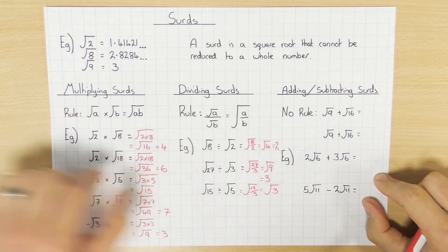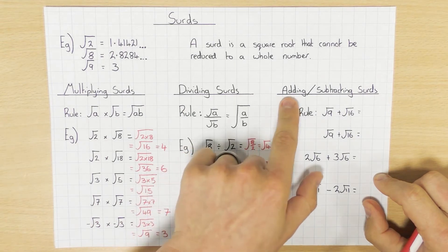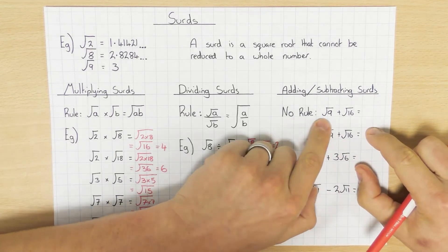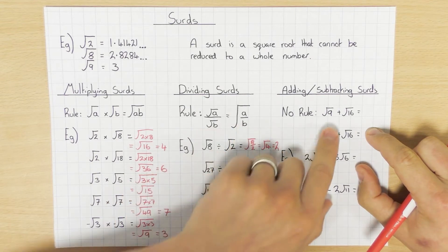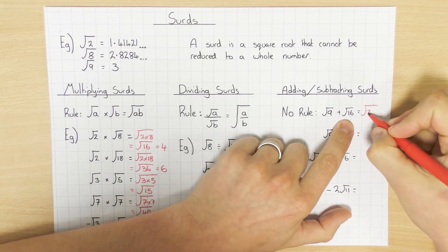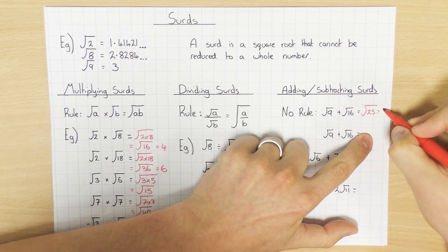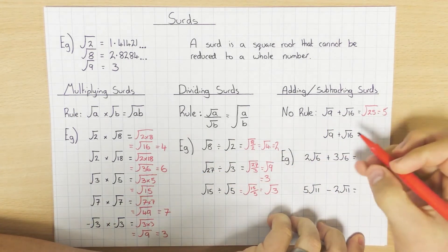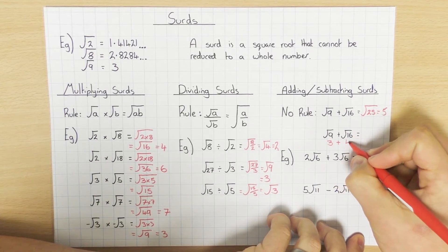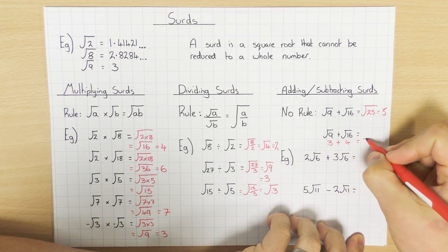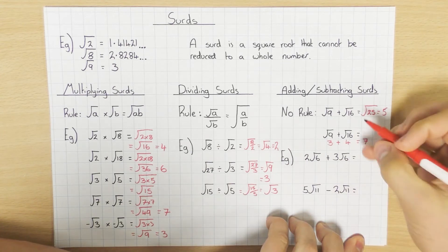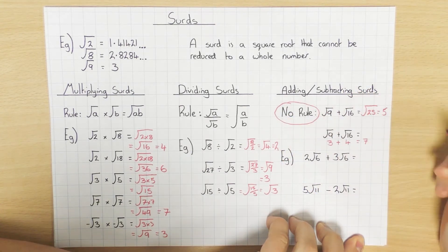So that's multiplying and dividing. Unfortunately with adding and subtracting it doesn't really make sense and there's actually no rule — and I'll prove why now. If we were to take the square root of 9 plus the square root of 16 and just add them together underneath the square root, 9 plus 16 is 25 and the square root of 25 is 5. However, the square root of 9 is 3 and the square root of 16 is 4, so 3 add 4 is 7. So there's actually no rule for adding and subtracting surds.